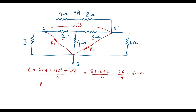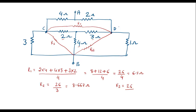Let me calculate R2. R2 = 26 / 3, since the denominator is the resistor opposite to R2, which is 3 ohm. This gives 8.667 ohm. Similarly, R3 = 26 / 2, since the opposite resistor is 2 ohm, which equals 13 ohm.